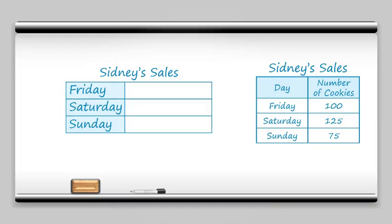In the table, on Friday it says there are 100 cookies. So let's go ahead and put 100 cookies next to Friday. Here's one, here's two, here's... wait a minute. If I put 100 cookies here, first of all it's going to take a long time, and it's going to take up a ton of space. So get out of here, cookies!